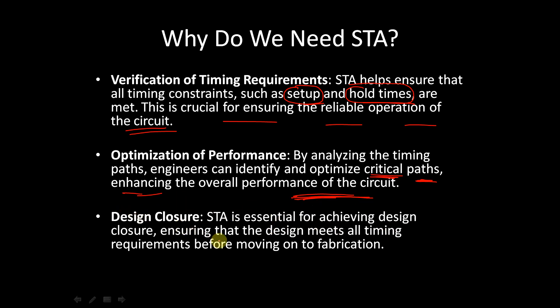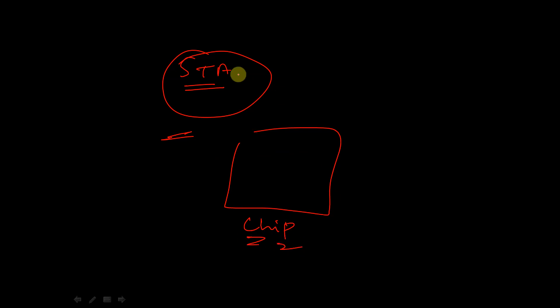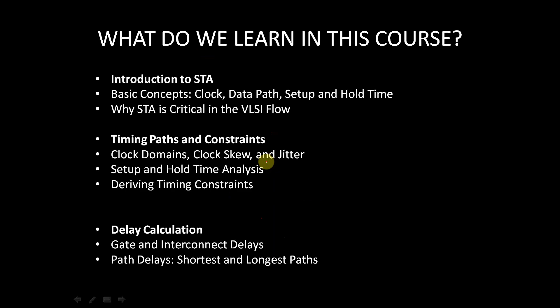Optimizing critical paths enhances overall performance of the circuit. Third, for design closure: STA is essential for achieving design closure, ensuring the design meets all timing requirements before moving on to fabrication. After performing STA we check whether all timing requirements are met. If they are, we can proceed to chip fabrication. Without STA, if we fabricate the chip and timing is not met, we cannot rebuild it — it is very costly and a waste of time.